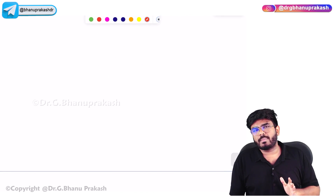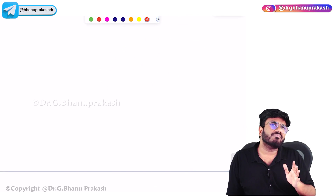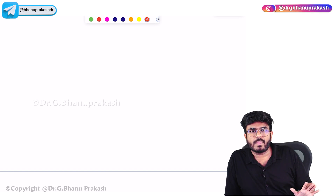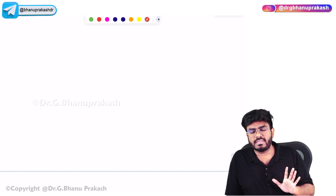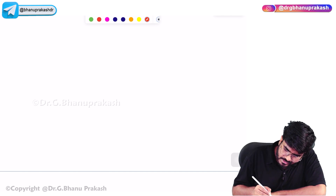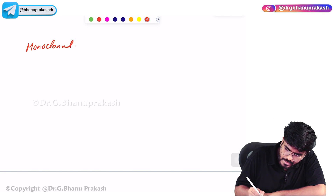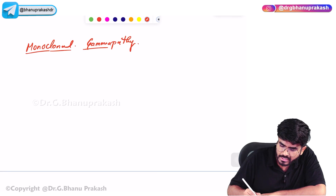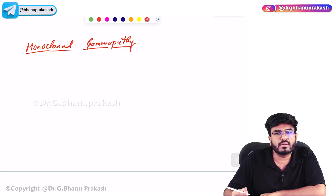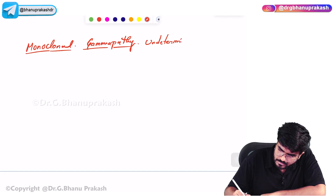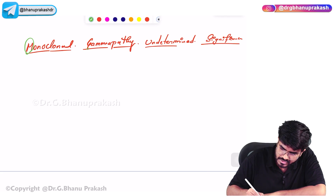There is one more condition that looks exactly like multiple myeloma — actually considered a precursor stage of multiple myeloma. There are no lytic bone lesions and nothing serious. The only thing observed is M-spike. This condition is called MGUS — Monoclonal Gammopathy of Undetermined Significance.